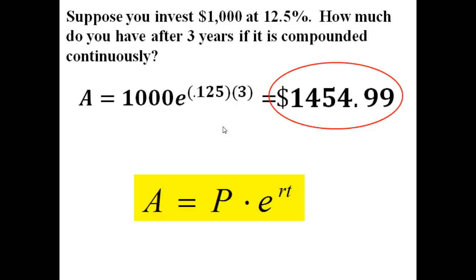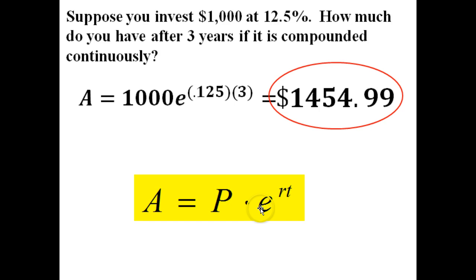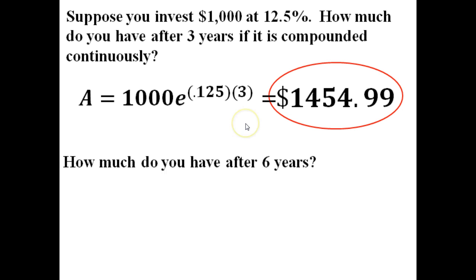Now what if I were to ask you though, how much money I had at the end of six years? Well, we're going to use the same formula that we were using before, this A equals P times E raised to the RT. Use that same one, only now instead of three here, it will be six. We're going to use six years.